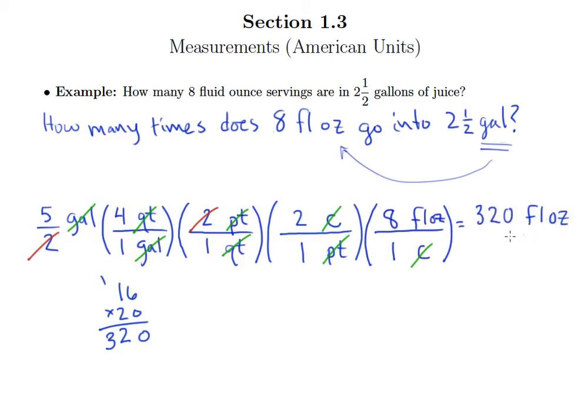Now that's been kind of a long process we just used there. But remember, the question was, how many eight fluid ounce servings are in two and a half gallons of juice? Well, now I understand that two and a half gallons is the same as 320 fluid ounces. So now the question is, how many eight fluid ounce servings go into 320 fluid ounces? So now I can just divide.